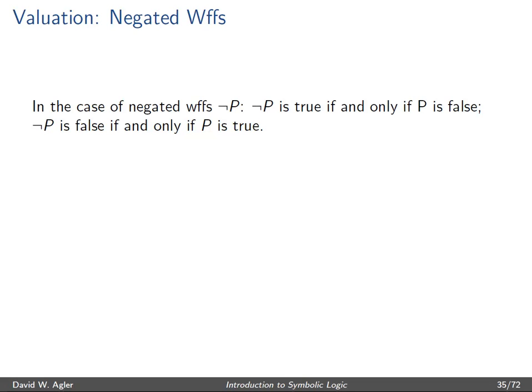For negated well-formed formulas, a negated formula is true if and only if P is false, and false if and only if P is true. So given the two ways of interpreting P, we can use the truth table to indicate the conditions under which not-P is true: if P is interpreted as true then not-P is false, and if P is interpreted as false then not-P is true.